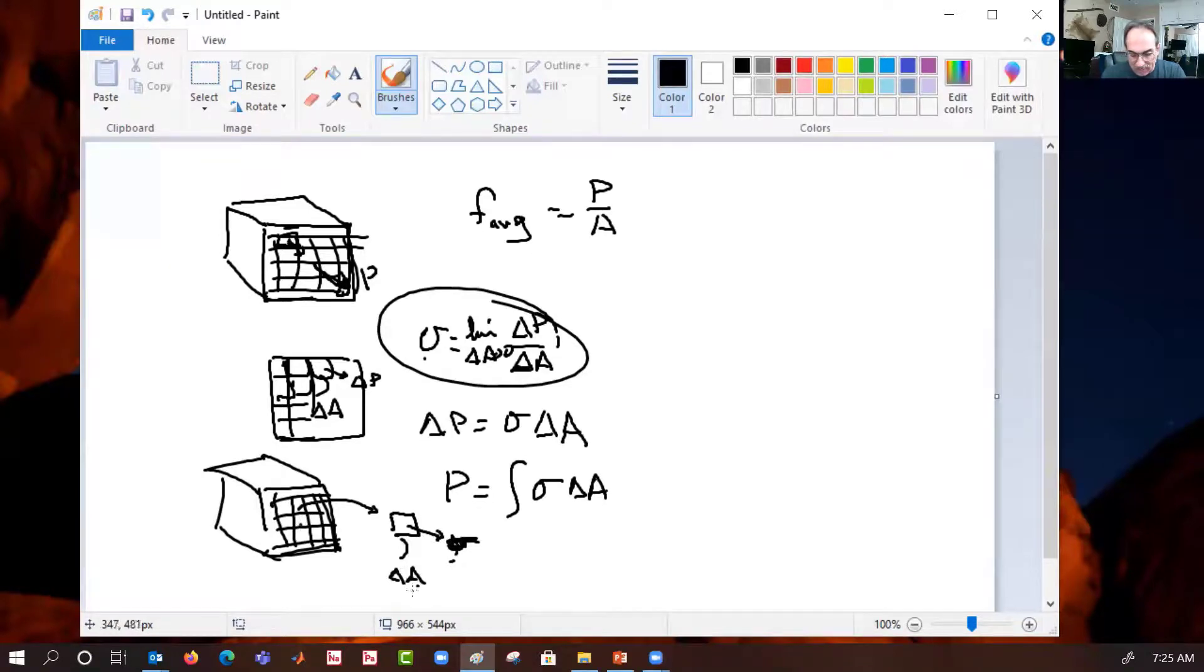If we sum up the stress times that delta A, plus the stress on this one times this delta A, plus the stress on that one times this delta A. This is the summation of the stresses on each little delta A. So, we can say the stress on each with the little delta A of each. If we summed all those up, that's what integration does, summing over the areas in a continuous fashion so we don't miss anything.